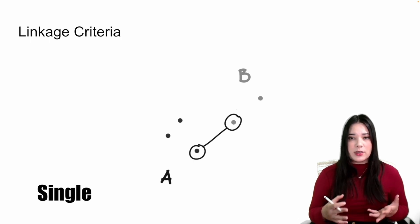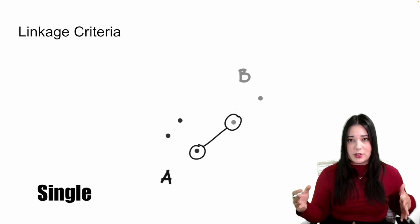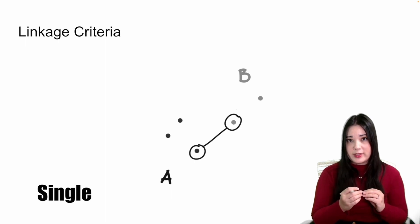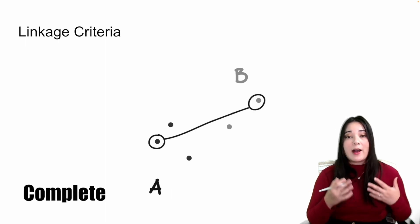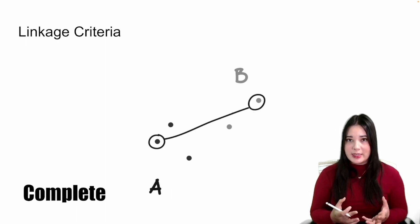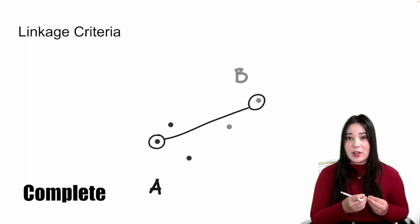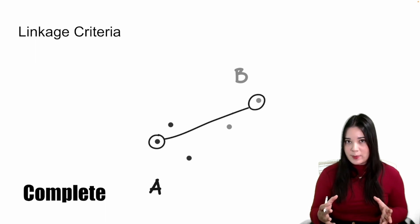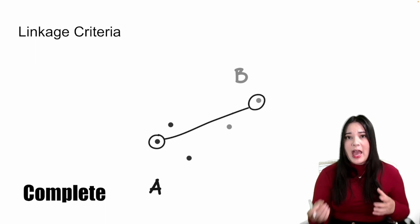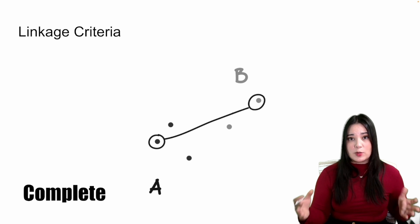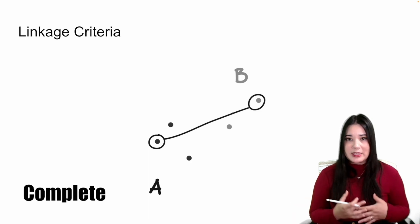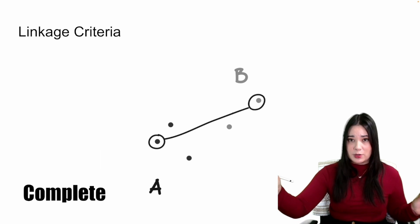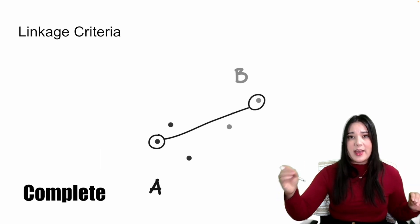As you can tell, single linkage doesn't care where any of the other points in the clusters are — it's only measuring the distance between the two closest points. On the other end of the spectrum, we have complete linkage. Complete linkage defines the distance between two clusters as the maximum distance. In other words, we look at every pair of points where one is in A and one is in B, and we find the maximum distance between them. Just like with single linkage, complete linkage doesn't care about any other point, just the two that are furthest away from each other, where one is in A and one is in B.